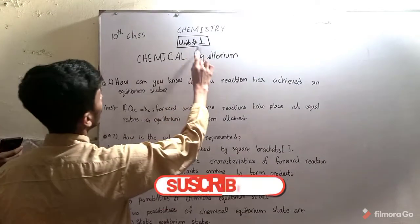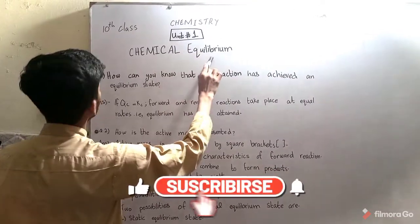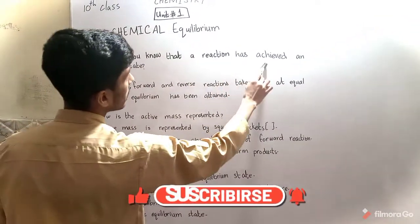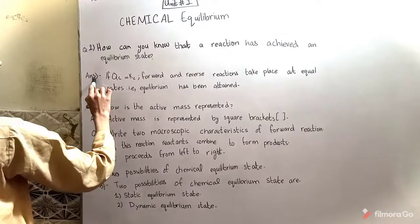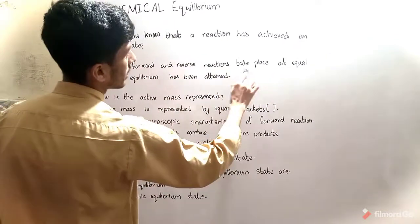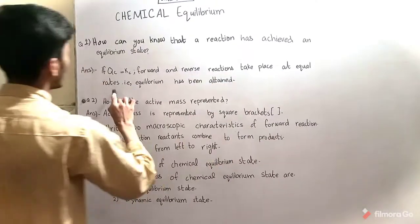10th class chemistry, unit number one, chemical equilibrium. Question number one: How can you know that a reaction has achieved equilibrium state? Answer: If Qc is equal, forward and reverse reactions take place at equal rates. That is, equilibrium has been attained.